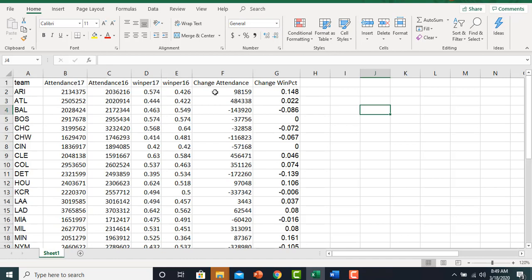So the first thing we do is create this change in attendance variable. All I did here was take the attendance in 2017 and subtract from it the attendance in 2016. Then I did a similar thing for the change in winning percent. This is a new variable I'm creating by taking the winning percent in 2017 and subtracting from it the winning percent in 2016. So now we're ready to run our regression.